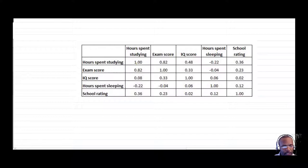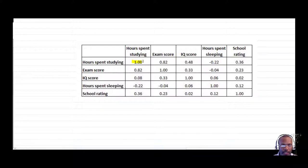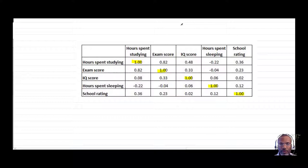For example, let's say that hours spent studying was recorded for a student along with exam score and IQ score. Hours spent studying is just a single number for any given student, so that x-y value would end up being the same, and you'd get perfect one-to-one correlation along the diagonal.